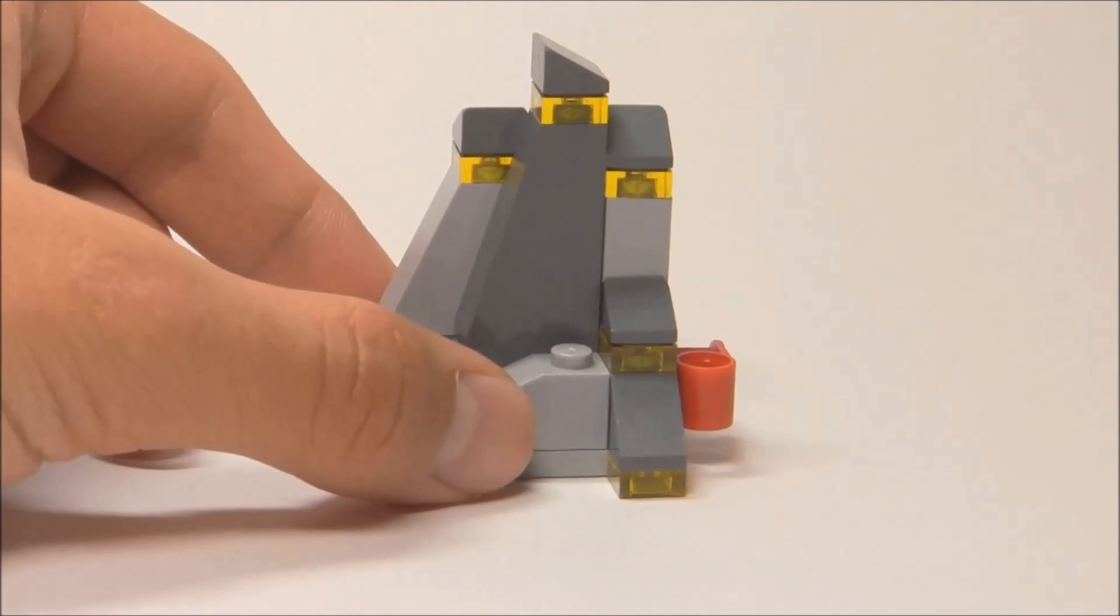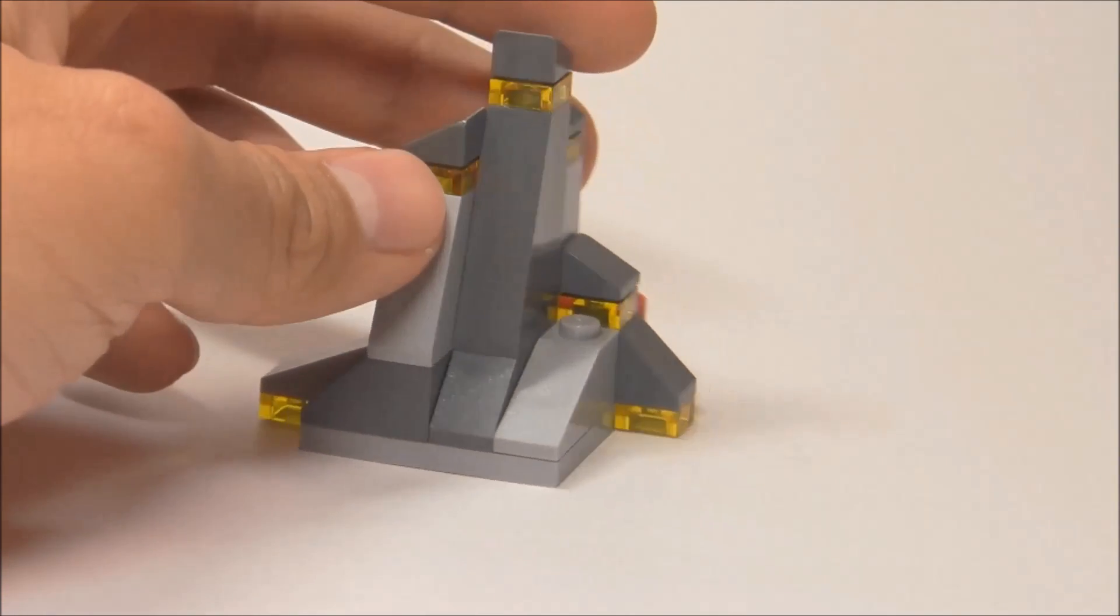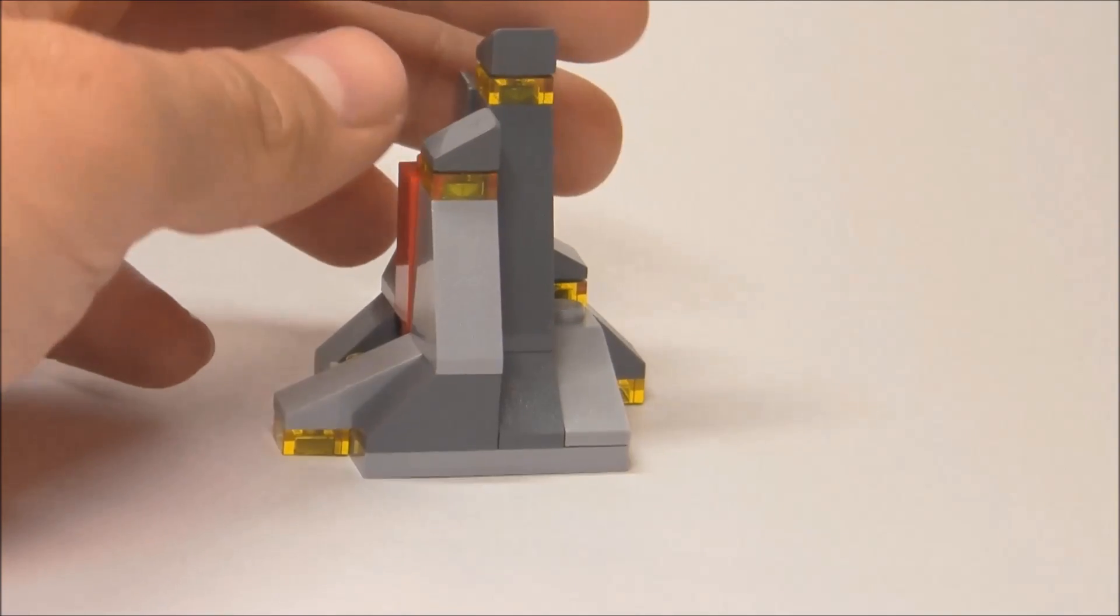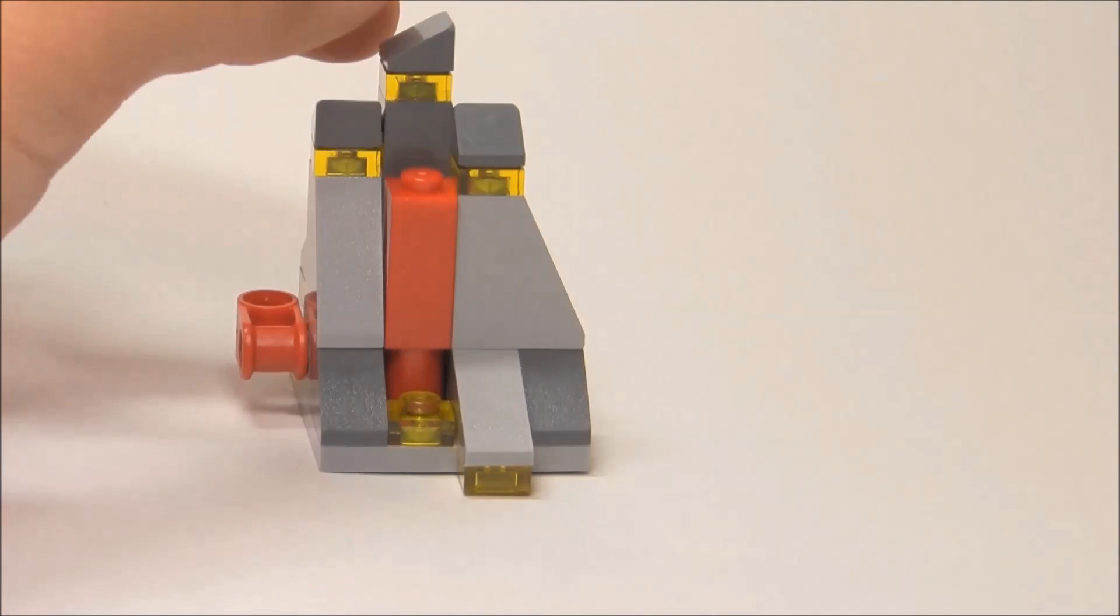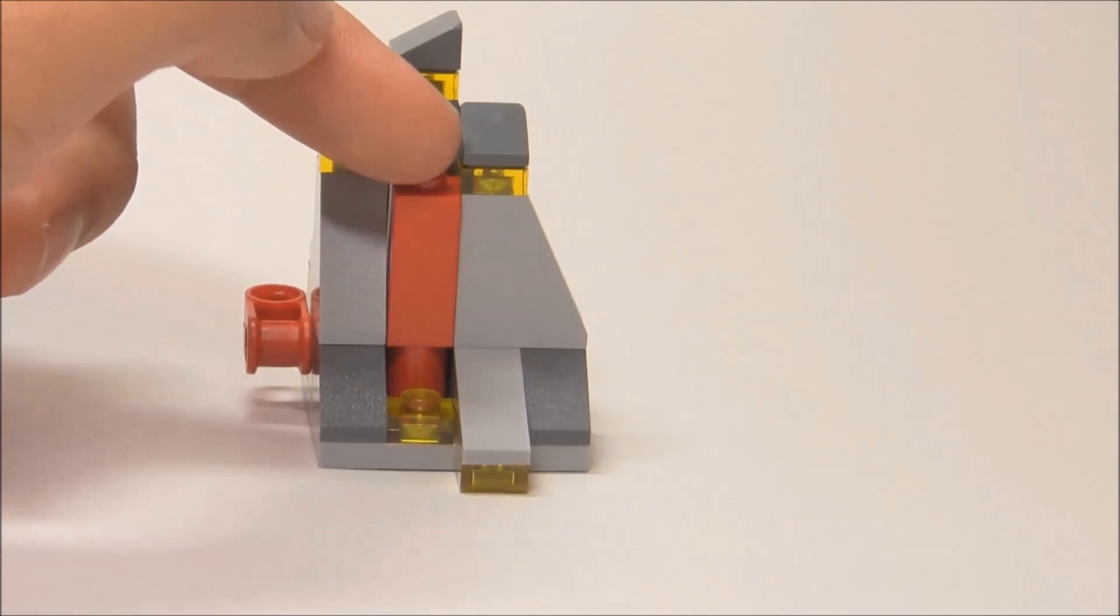Okay, so here is the build of this set. It's a very similar build to Thor and the Cosmic Cube set, which came out in 2012. That was also a polybag, and it also had a rock structure and a revealing brick. But you'll see more of that play feature later.